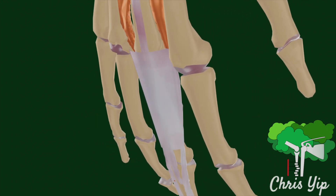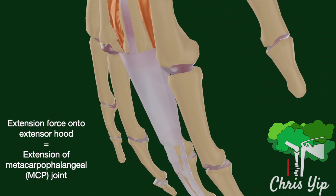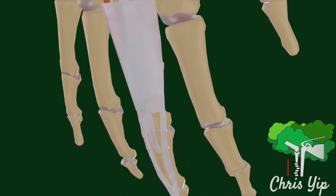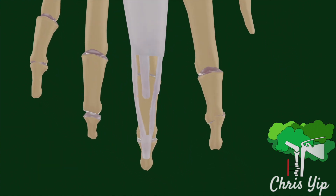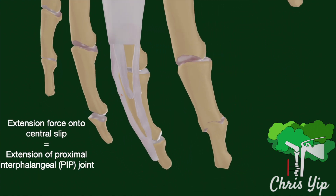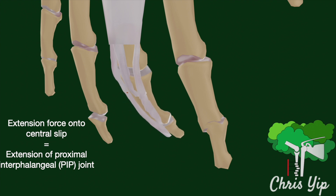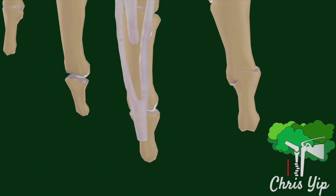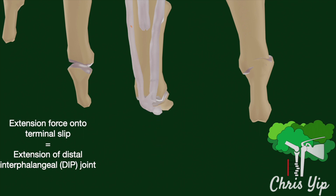When tension is exerted onto the extensor hood, it leads to the extension of the metacarpophalangeal joint. When tension is exerted onto the central slip, it leads to extension of the proximal interphalangeal joint. When tension is exerted onto the terminal slip, it leads to extension of the distal interphalangeal joint.